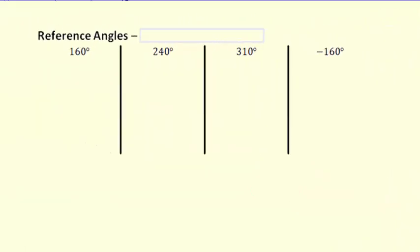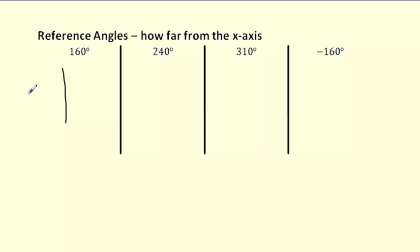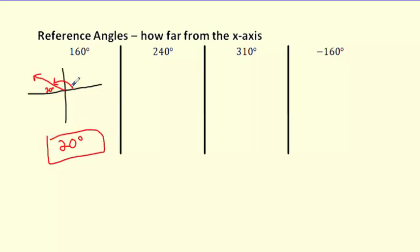That's called a reference angle. A reference angle is just how far you are from the x-axis — how many degrees from the x-axis. For example, if I give you 160°, it's in the second quadrant. The leftover chunk from the x-axis is 20 degrees, so the reference angle of 160° is 20°.